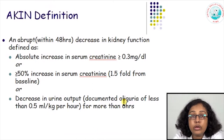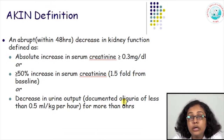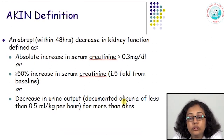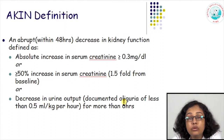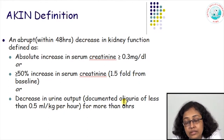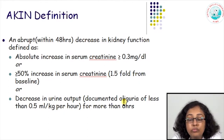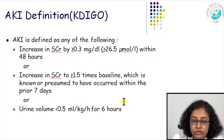The RIFLE criteria said there was a doubling or 1.5 times increase in serum creatinine, but did not specify the duration. The Acute Kidney Injury Network gave a better definition in terms of time: an abrupt decline within 48 hours of kidney function, defined as an absolute increase in serum creatinine of at least 0.3 mg/dL, or a 50 percent increase in serum creatinine, or a decrease in urine output for more than 6 hours. They added a time context to the definition.